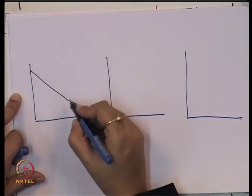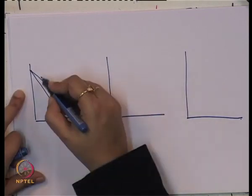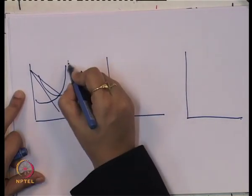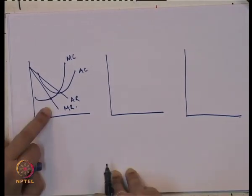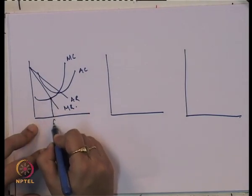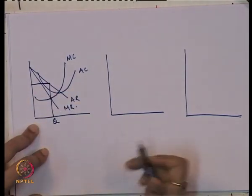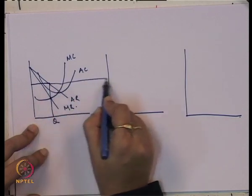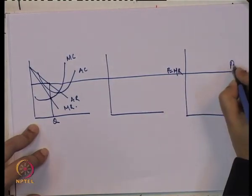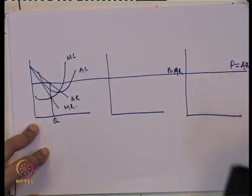In the graphical representation: this is the average revenue curve, this is the marginal revenue curve, this is the average cost curve, and this is the marginal cost curve. The point where marginal revenue and marginal cost intersect gives us the equilibrium quantity and equilibrium price.